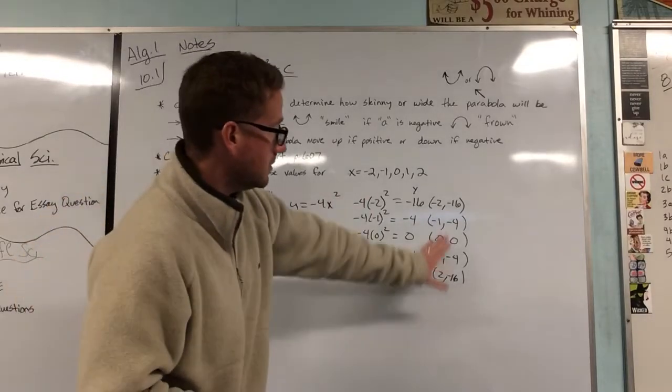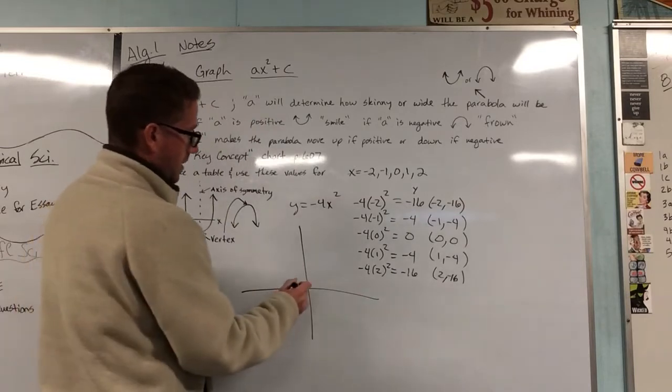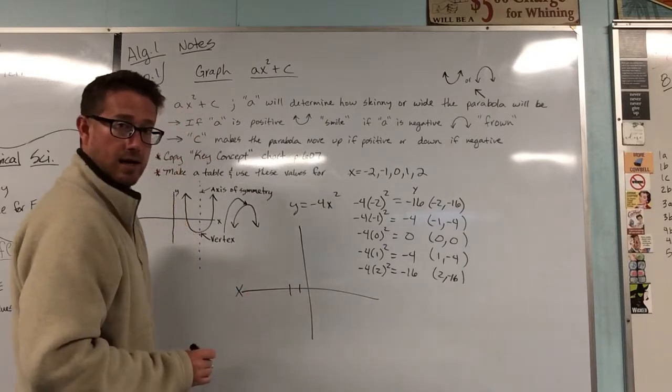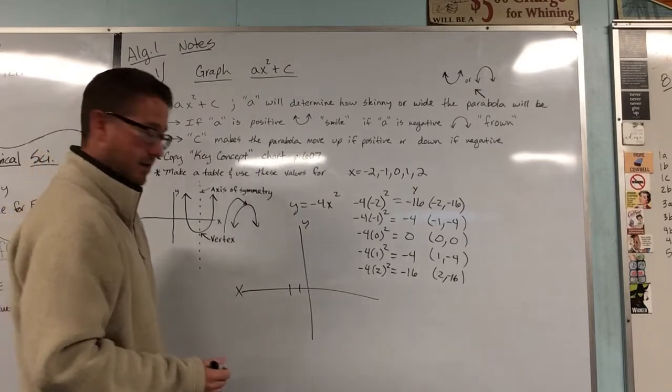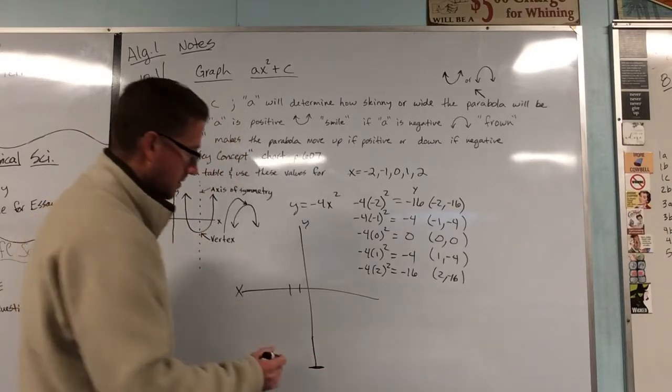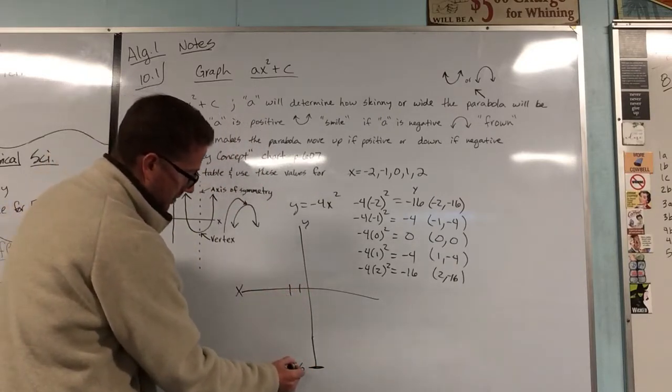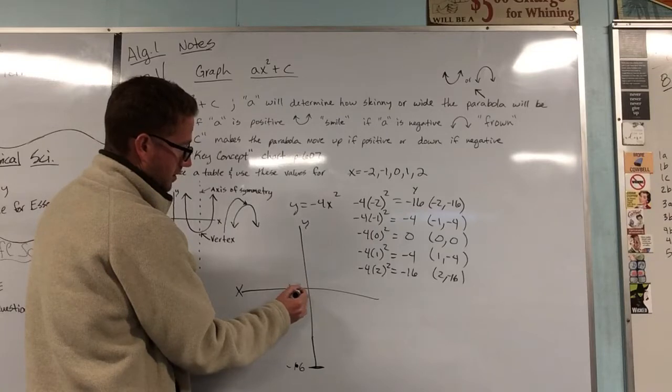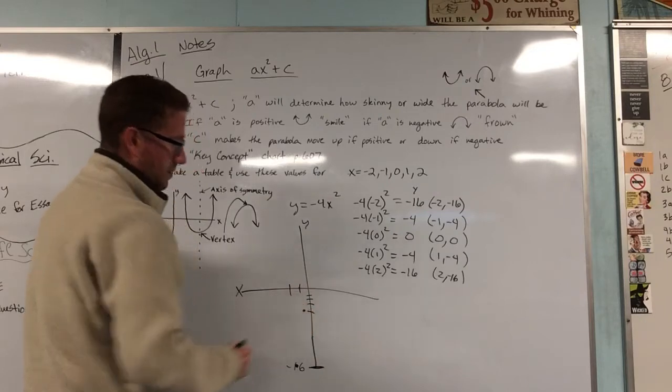Okay. So now all we're going to have to do is graph these four points right into our graph. Okay. So if we were to go over a negative 2, this is our x-axis, our y-axis. Now I know negative 16, not going to be pleasant to go all the way down there. So we're just going to say right there, that's our negative 16 point, just to save some time. So we go negative 2, go down, there's our negative 16. Now if we go negative 1, we go left 1, we go down 4. 1, 2, 3, 4, we'd be roughly right there.